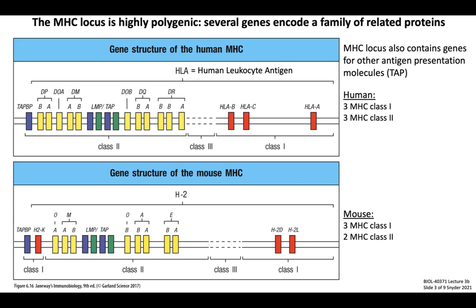First, the genetic locus of MHC is highly polygenic, meaning that there are several distinct genes which encode a family of related proteins. These diagrams show the genetic organization of the MHC locus in humans in the top panel and in mice in the bottom panel. In humans, MHC molecules are referred to as human leukocyte antigens, or HLAs, while in mice they are referred to as histocompatibility 2, or H2. Both species have multiple genes encoding distinct forms of each molecule.